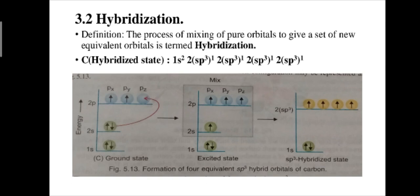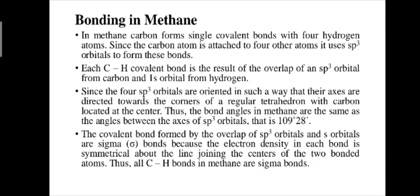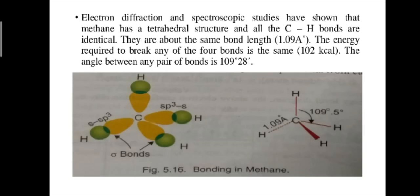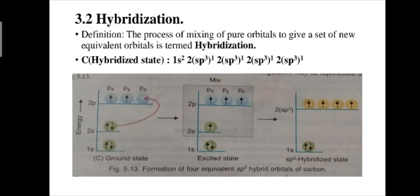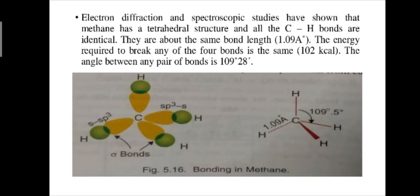Now let us see bonding in methane. In methane, the central atom is carbon. In the hybridized state, carbon uses sp3 hybrid orbitals, giving the configuration 1s2 2sp31 2sp31 2sp31. Carbon in the hybridized state has sp3 hybridization, which corresponds to tetrahedral geometry.